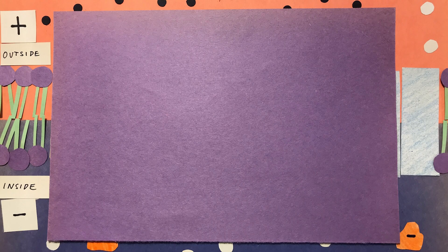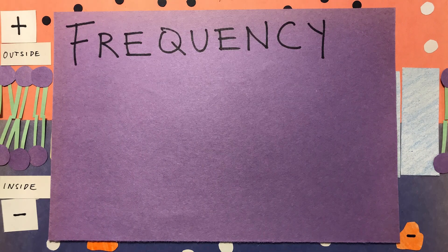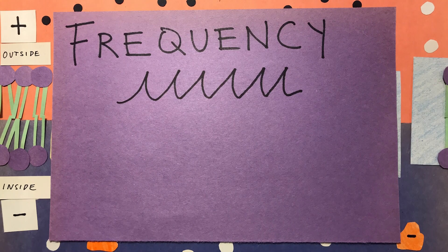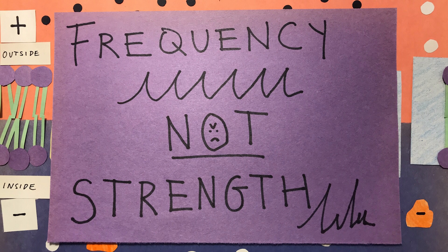An important thing to remember about action potential is that it is frequency and not the strength of the action potential that varies. So, the frequency of an action potential will be much greater if you're being chased by a lion versus if you're smelling a flower, but the strength of the action potential does not change.